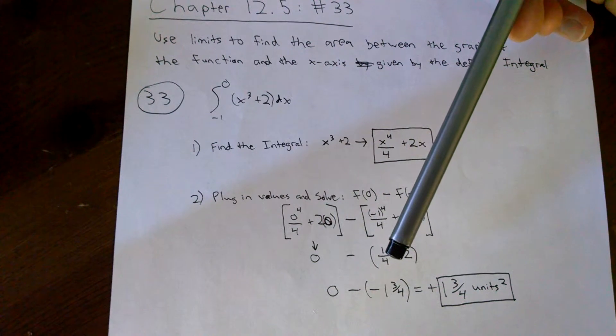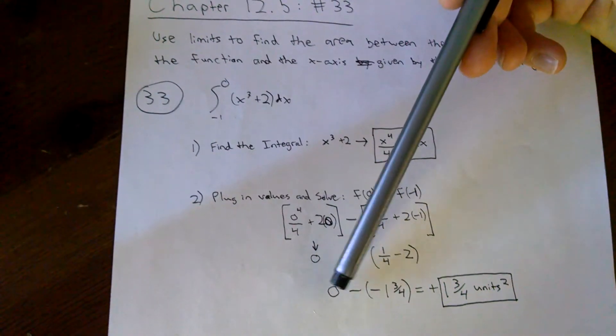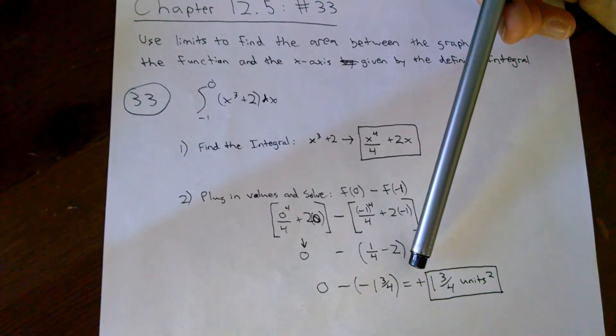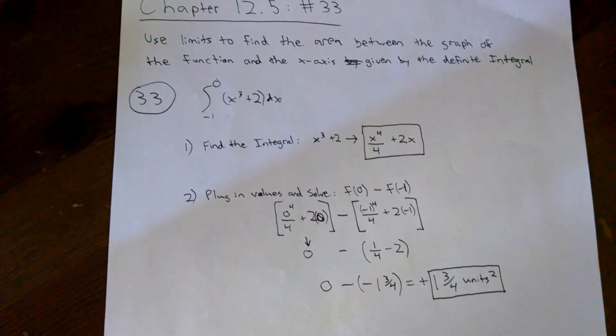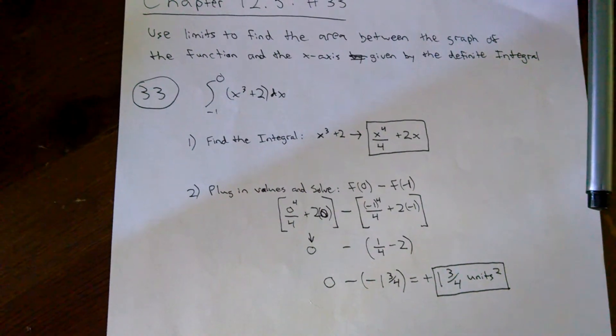which is equivalent to -1¾. So now we have 0 - (-1¾), which equals positive 1¾. This is the answer for the area between the graph of the function and the x-axis with limits from 0 to -1.